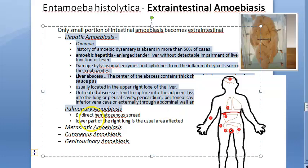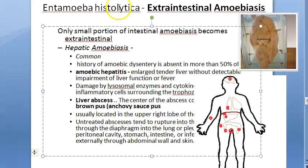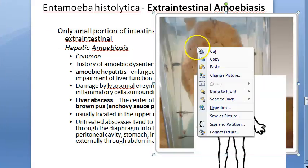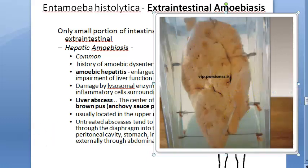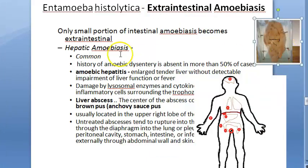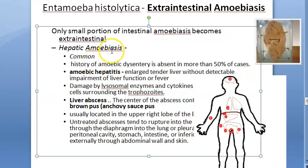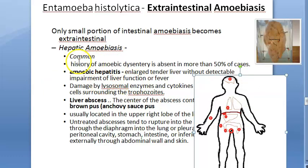In hepatic amoebiasis, the liver is affected. Looking at a photo of the liver, we can see liver abscesses caused by intestinal amoebiasis. Hepatic involvement is the most common form of extra intestinal amoebiasis — only a very small portion of intestinal amoebiasis cases become extra intestinal, but of those, hepatic amoebiasis is the most common. The liver is heavily affected.